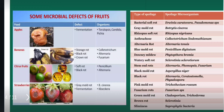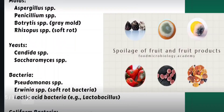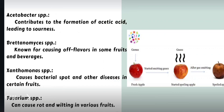Here are some of the listed microbial spoiling agents: Aspergillus species, Penicillium, Rhizopus species, Pseudomonas, Erwinia, etc. At the same time, there are some characteristics of microbial spoilage — for example, Acetobacter species contributes to the formation of acetic acid, leading to the sourness of fruits.